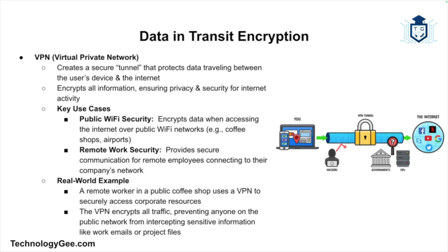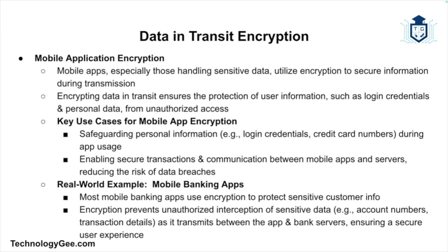A VPN, or Virtual Private Network, creates a secure tunnel for data to pass through, encrypting all information traveling between the user's device and the internet. Use cases include encrypting data when accessing the internet over public Wi-Fi networks and ensuring secure communication between remote employees and their company's network. For example, a remote worker at a public coffee shop using a VPN will have all their traffic encrypted, ensuring no one on the public network can intercept sensitive information like work emails or project data.